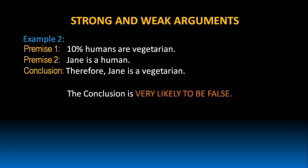In this argument, the conclusion is very likely to be false. Why do I say that the conclusion is very likely to be false? Because premise 1 says 10% humans are vegetarian. Here, 10% is a very low value. So from this, we cannot conclude that Jane is a vegetarian just because she is a human. Hence, we treat this argument as a weak argument.